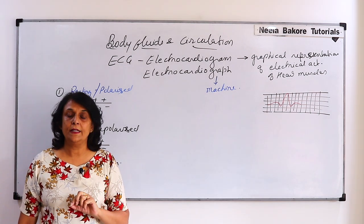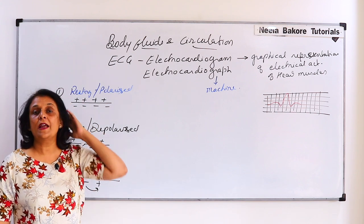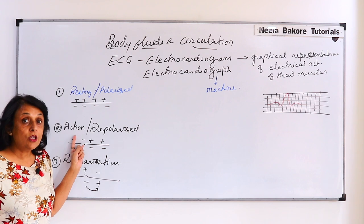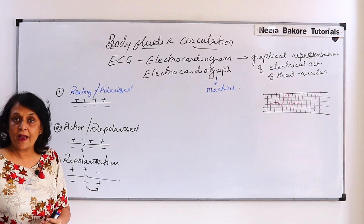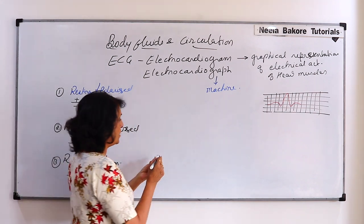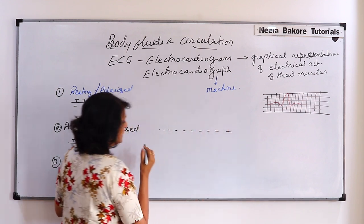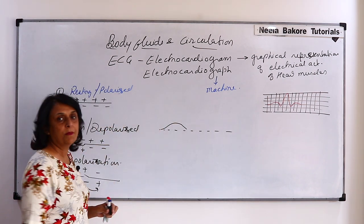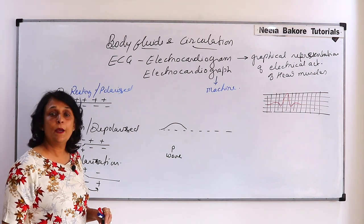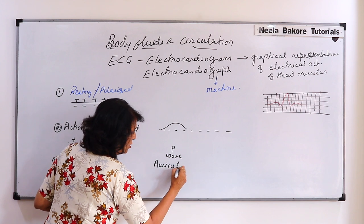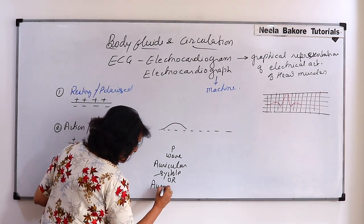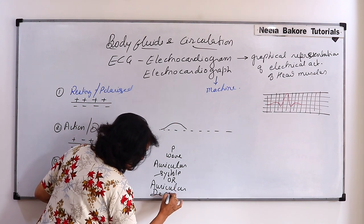Now going to the cardiac cycle: first is auricular contraction. Auricular contraction means auricular depolarization. When the auricles contract, the charges and stimulus run, and our machine detects them in the form of a graph. This peak in the graph we call P-wave. The P-wave represents auricular systole, or auricular depolarization.